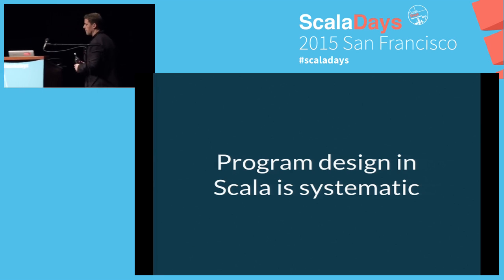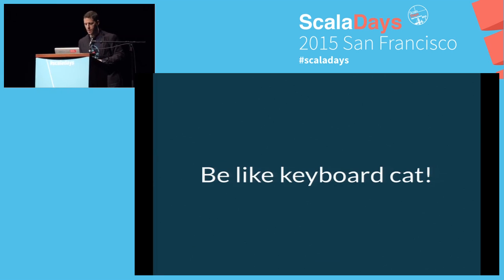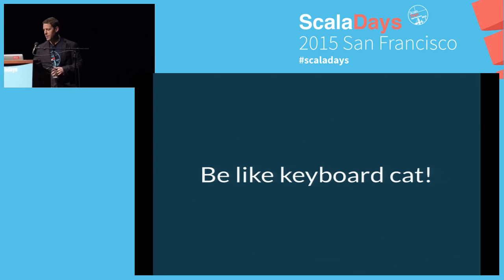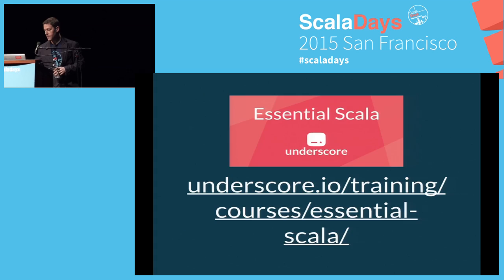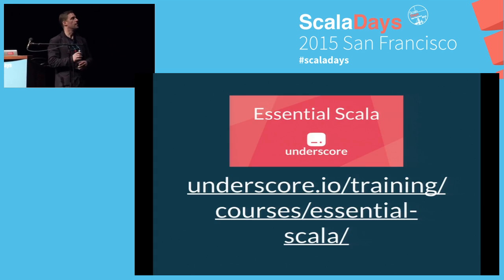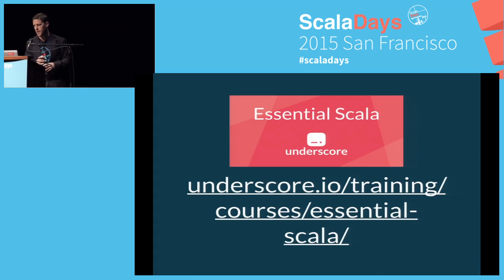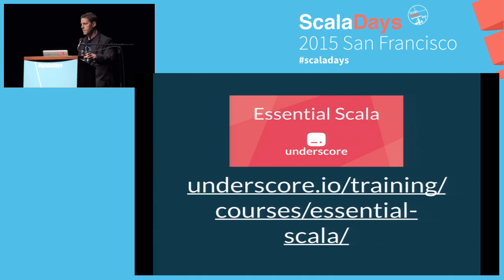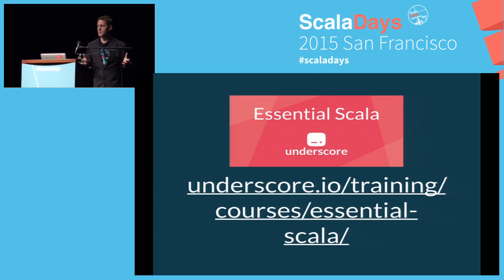Program design should be systematic: work out the problem, get the structure right, and the code follows from it. Once we understood the structure, the code is just a matter of pattern recognition. Be like Keyboard Cat — do a bit of thinking and then be in a happy place. If you want more, this is the core of our book Essential Scala — check it out if you want.